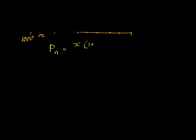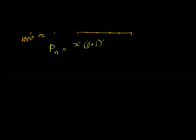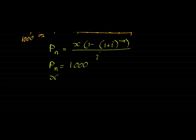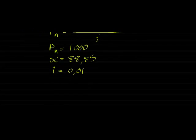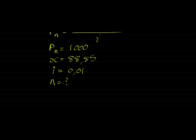So my present value formula, there we go, 1 minus (1 plus i) to power negative n over i. In this formula, we know that our present value of our loan is 1,000 Rand. We know what our recurring payment is, 88.85. We know our interest on this loan. Each time I make a payment, I get 1% interest added to the balance. And then finally, my time period is what I am looking for.